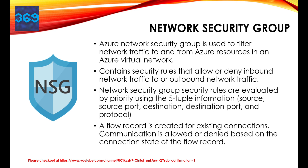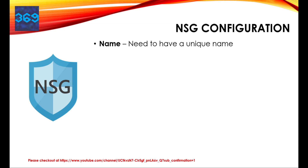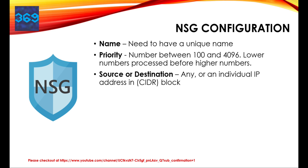Now let's look at the various configuration parameters available with NSGs. The first one is the name — it must be a unique name within the network security group. The next important one is priority. It is a number between 100 and 4096, and the rules are processed in priority order with the lower number processed before the higher number. Once a traffic matches a rule, processing stops. As a result, any rules that exist with lower priorities — meaning higher numbers — are not processed.